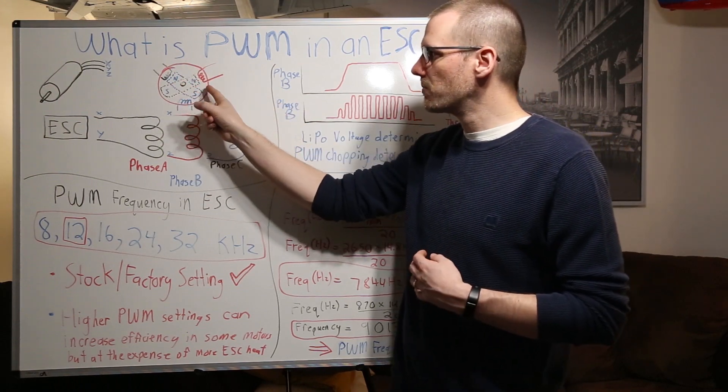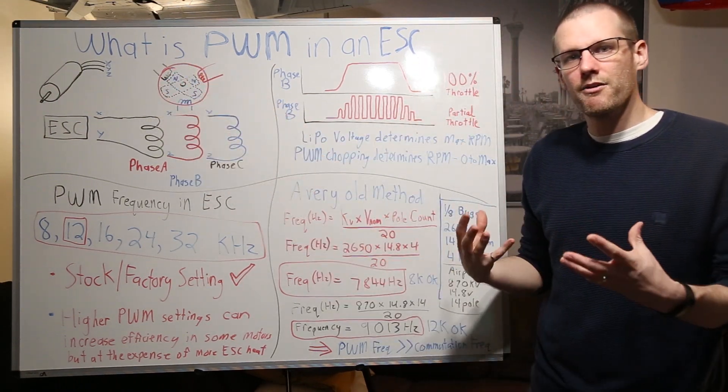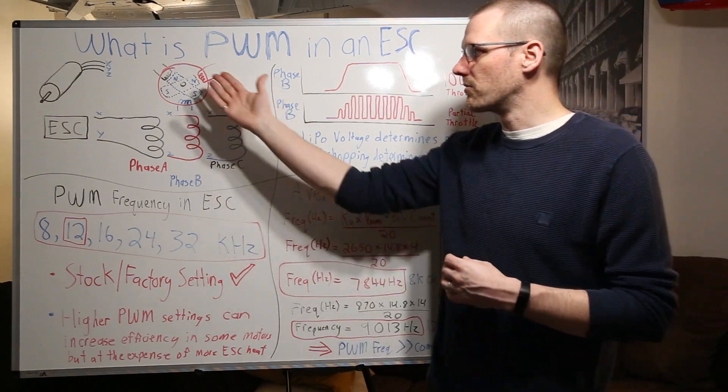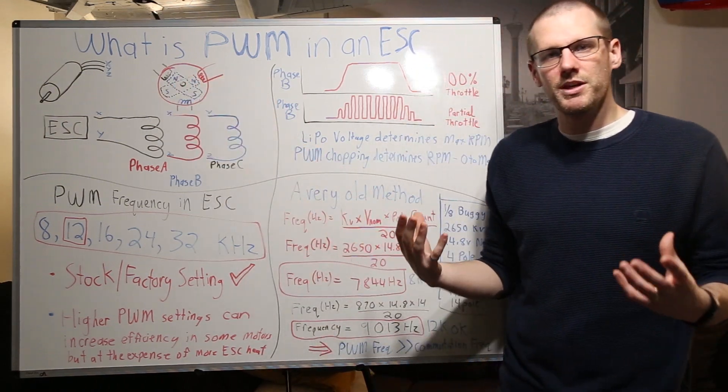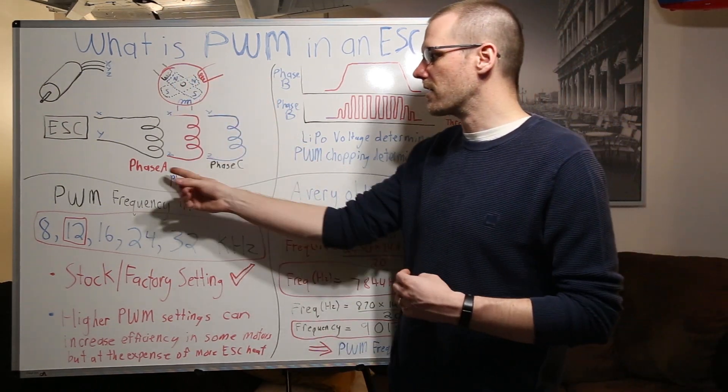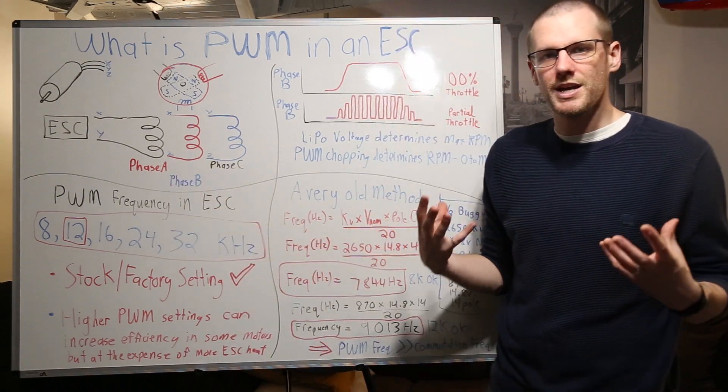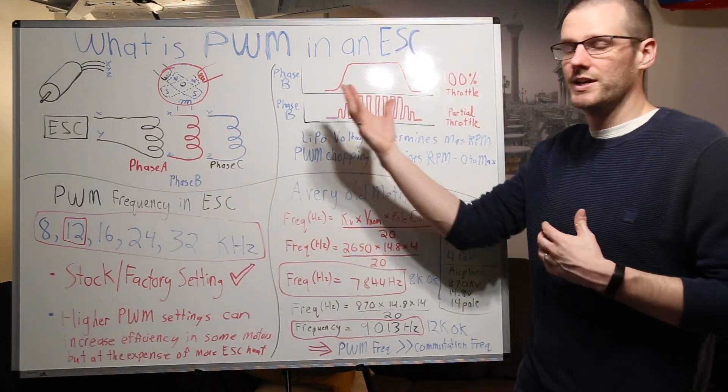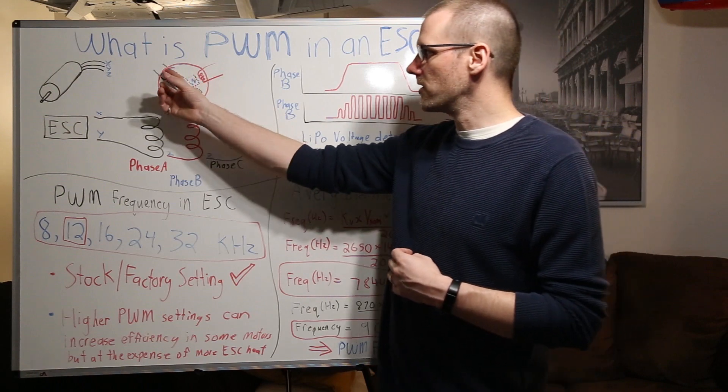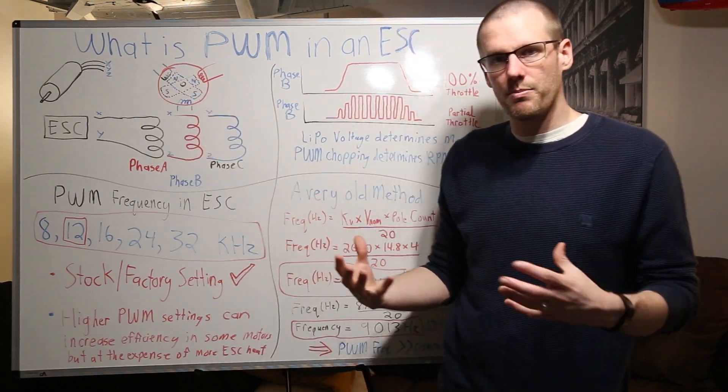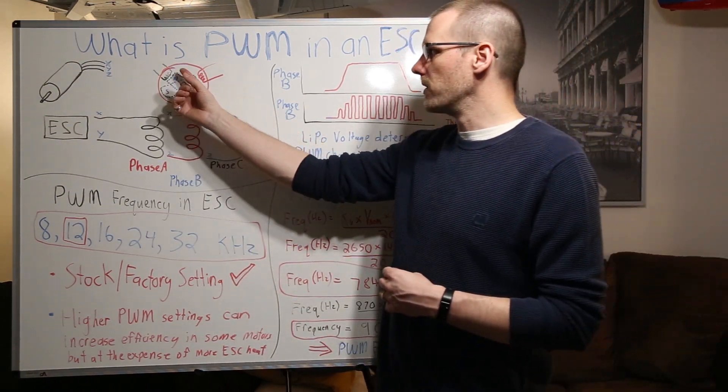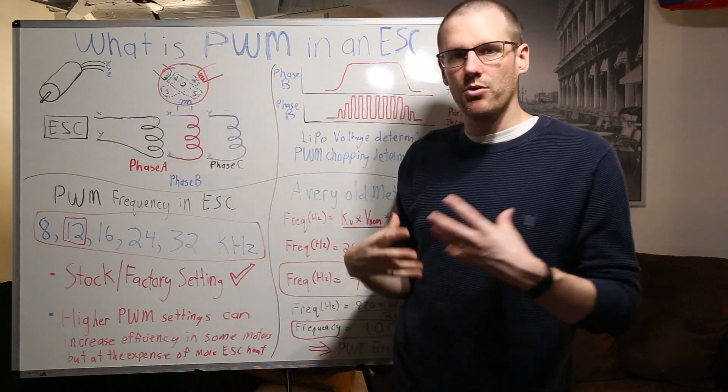Now what you'll notice is as the south pole comes around, we now want to do the exact same thing at the right time, but instead of it being a north pole that we're going to produce out of our phase A, we need to produce a south pole so again we can repel. We go ahead and turn this into a south pole by inverting everything, and then we can go and rotate that motor further.